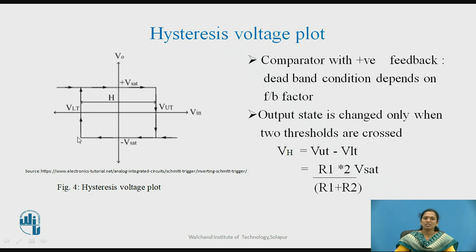Again, it will remain in the −Vsat state, but when it crosses the lower threshold voltage level, it will give the transition from −Vsat to +Vsat.